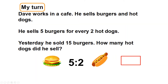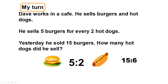Dave works in a cafe — he sells burgers and hot dogs. He sells five burgers for every two hot dogs, so we're looking at a part-to-part ratio: five burgers to two hot dogs. Yesterday he sold 15 burgers — how many hot dogs did he sell? I need to work out what I multiply five by to make 15, and then do the same to the two. Five, ten, fifteen — two, four, six — so he sold six hot dogs.